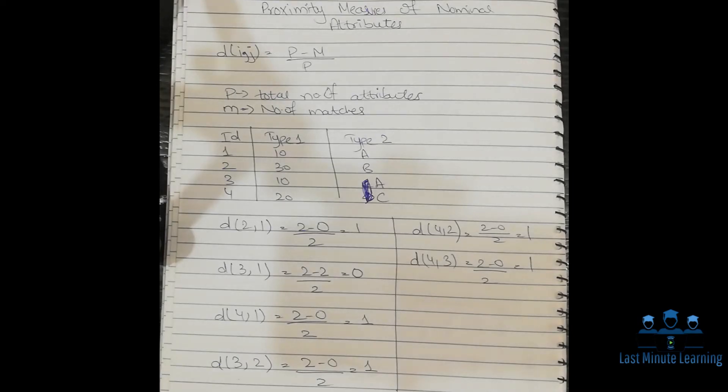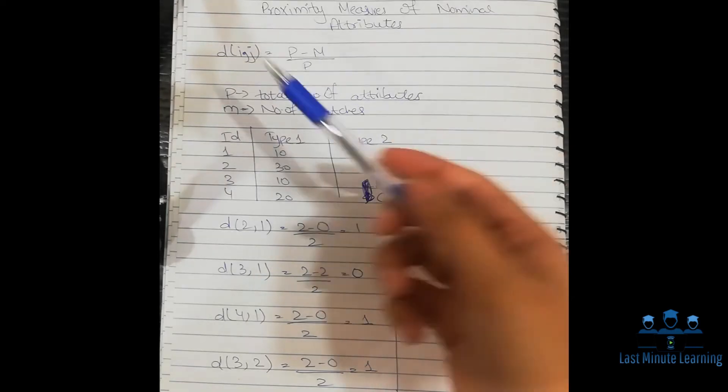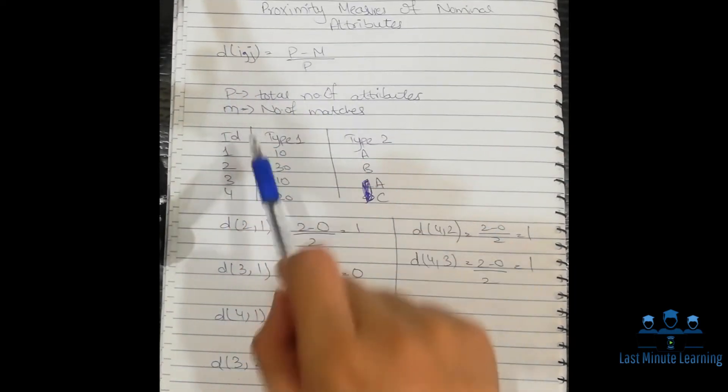Hi guys, welcome to Last Minute Learning. Today the topic we're going to study is proximity measures of nominal attributes. As you might already remember, nominal attributes are also called categorical attributes. Two nominal attributes are related to names, things, and so on. Now let's start our topic.